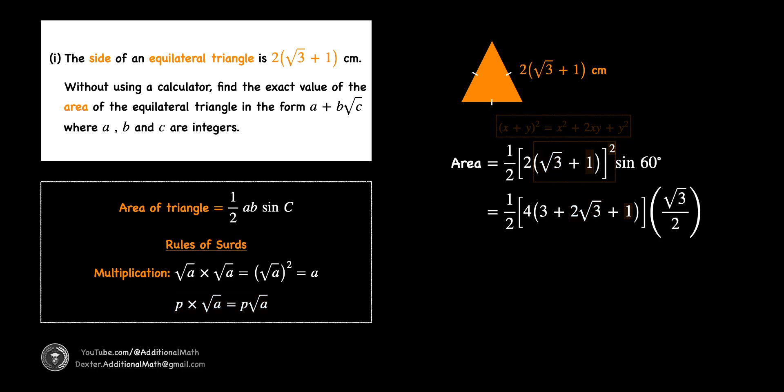Based on the trigonometric ratios of special angles 30°, 45°, and 60°, sin 60° equals (√3)/2. Next, we cancel 4 with the 2 halves. Simplifying the terms inside the parenthesis gives 4 + 2√3, with √3 outside. Using the same multiplication rule, we multiply √3 by 2√3 to give 6, and add 4√3. Thus, the area of the equilateral triangle is 6 + 4√3 cm².